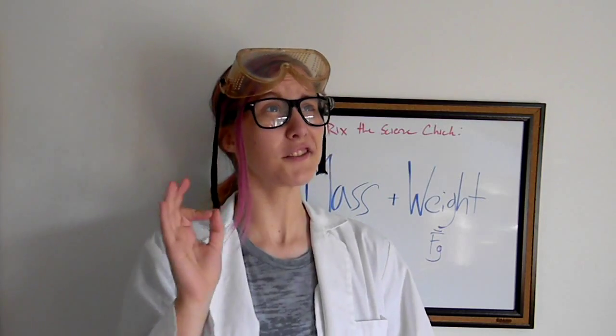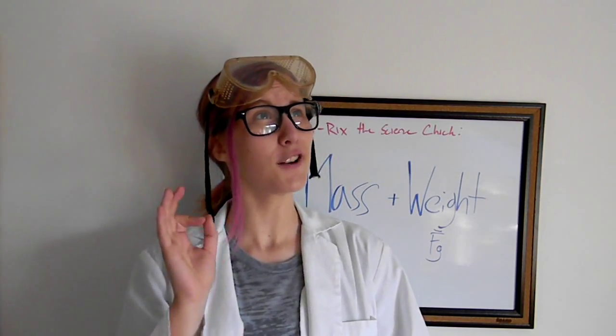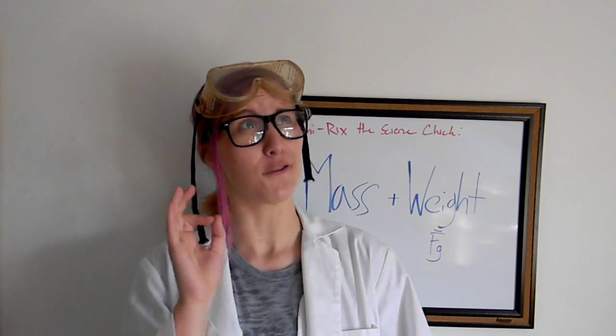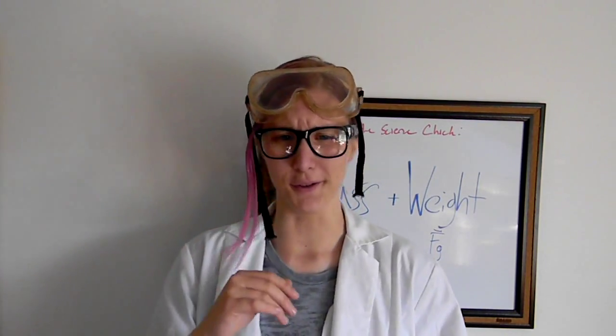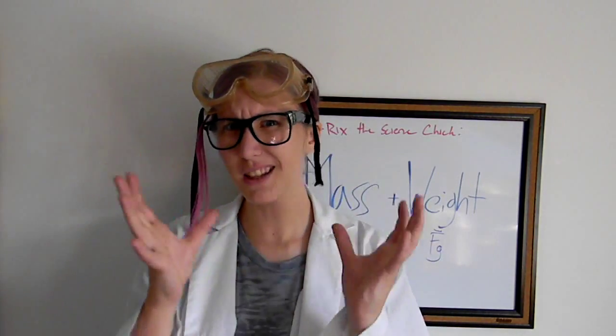Weight is the attraction between a celestial body and an object — basically it's the force on an object due to gravity. Mass is an invariant property of matter. It's sort of like the quantity of stuff in an object.